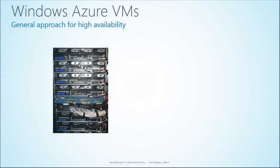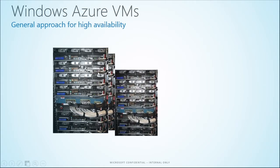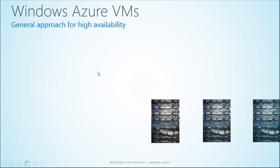Let's talk a little more about high availability — important from the SQL Server perspective and for Windows Azure in general. What you have on screen is a rack — one of the racks we have in Windows Azure. Each physical machine has virtual machines, and in the middle is what we call the top of rack — the connection from that rack to the rest of the world, where all the connectivity and power go. We have many of these racks in a Windows Azure data center.